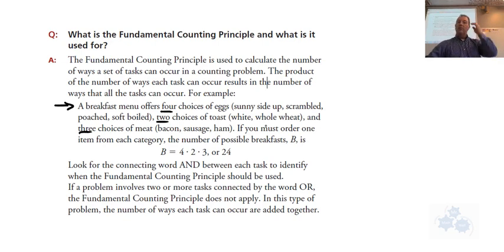You must order one from each category. So the question that you can answer using this fundamental counting principle is how many different breakfasts can you order? How many times could you go back and order something different every time? There are four choices for eggs, two choices for the toast, and three choices for the meat. The fundamental counting principle says you just multiply all those different number of choices together. You get 24.